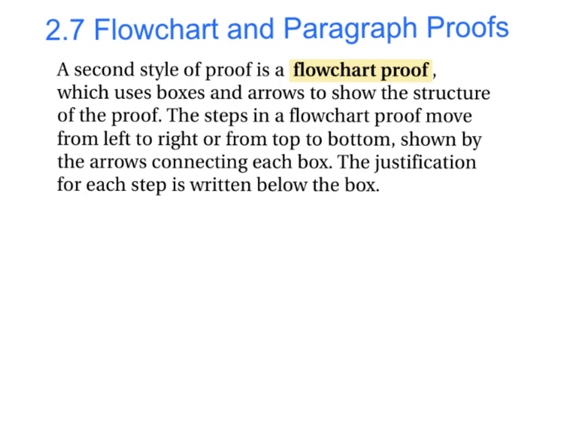In the last section of chapter 2, we're going to talk about two more kinds of proofs: flowchart and paragraph proofs. A flowchart proof uses boxes and arrows to show the structure of the proof. The steps move from left to right or from top to bottom, shown by arrows connecting each box. The justification for each step is written below the box.